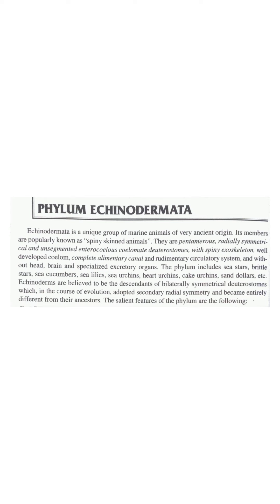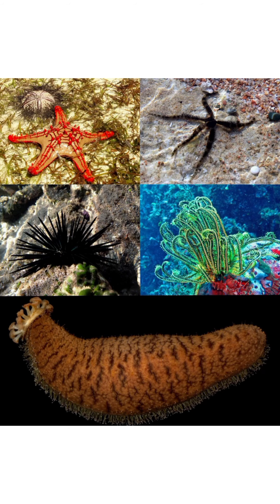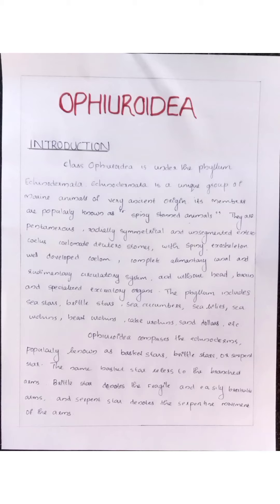The phylum includes sea stars, brittle stars, sea cucumbers, sea urchins, sand dollars, etc. The name basket star refers to the branched arms. Brittle star denotes the fragile and easily breakable arms, and serpent stars denotes the serpentine movement of the arms.